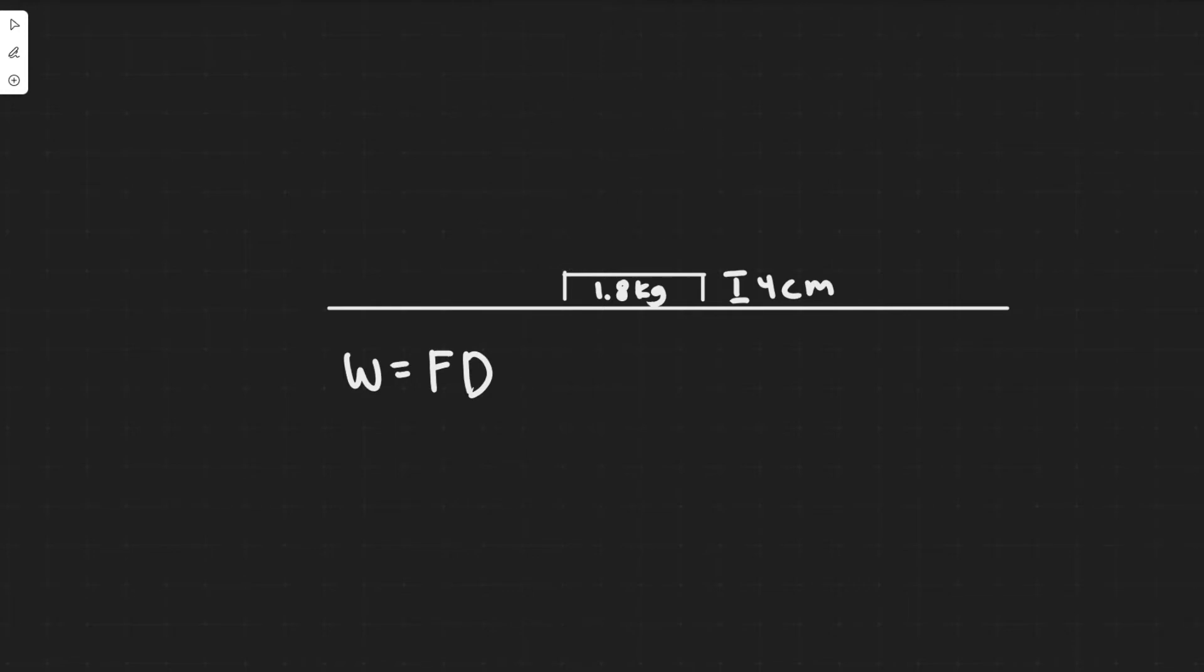So the force acting on it when we move it up in order to do it is going to be the force of gravity. So we know F is just going to be equal to mg in this case. So work equals mg times the distance.